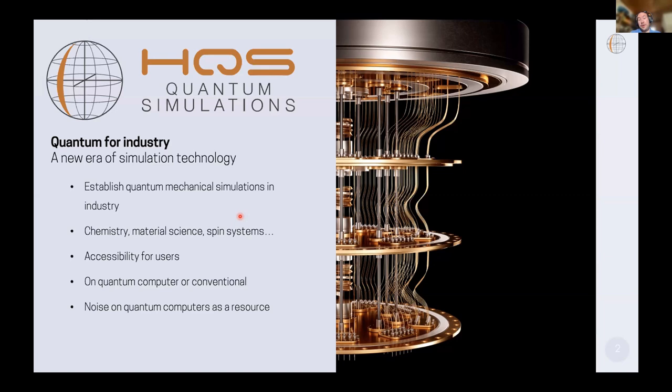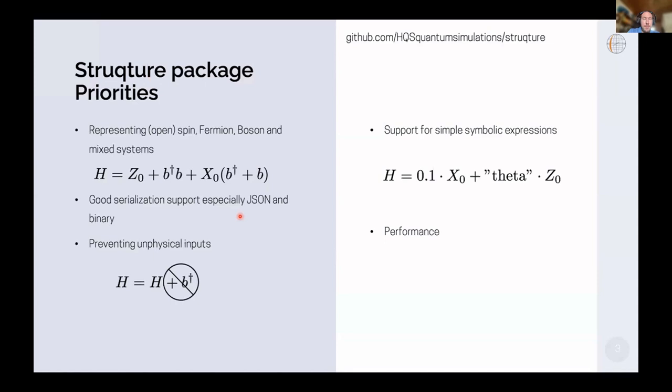So what does Structure actually do and what were our priorities for it, and also why did we choose Rust? As you've seen on the slide before, we want to offer a whole range of simulation solutions and make them as user friendly as possible. For that we need to have a good way to exchange the definition of the quantum simulation that we want to do, and the most important definition is the Hamiltonian.